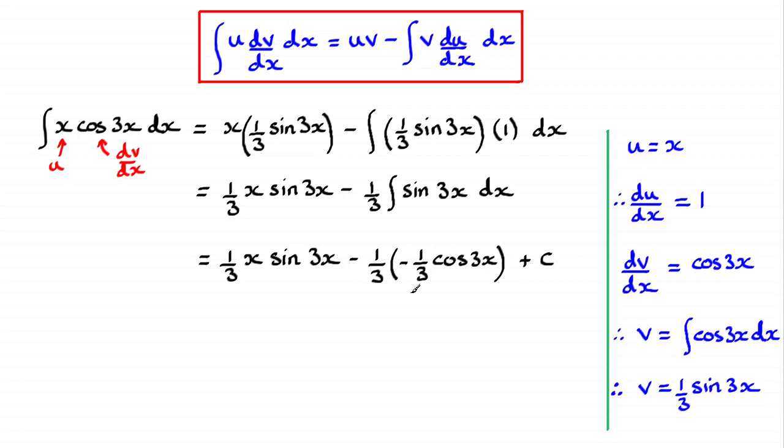So all I need to do now is just tidy this term up. So minus a third times minus a third is going to be plus one ninth. And if you do that you're going to get this result here. Don't forget your constant of integration plus c.